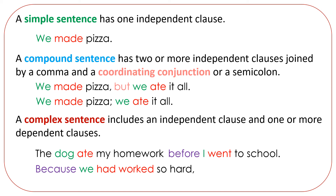Because we had worked so hard — that is a dependent clause. We were really hungry. That's an independent clause. We have the subject we and the verb were. Together, we have the complex sentence: Because we had worked so hard, we were really hungry.